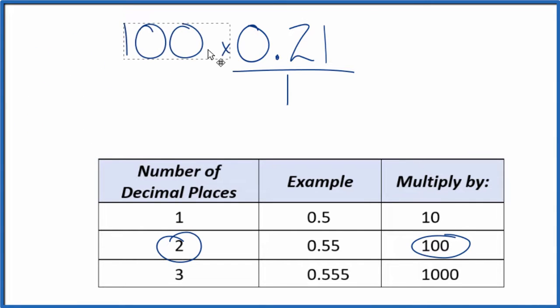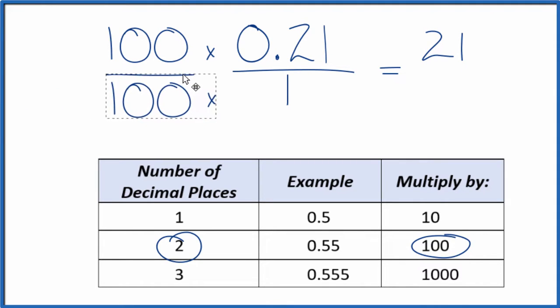So 100 times 0.21, that gives us 21. There's our whole number. But we can't just multiply the numerator by 100. We also have to multiply the denominator by 100.